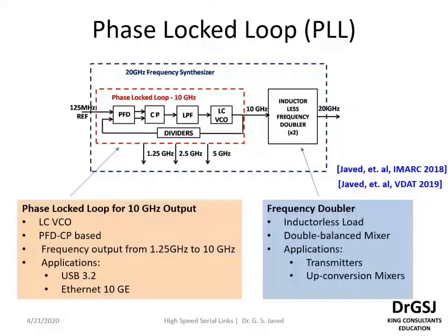This frequency synthesis is divided into two blocks: a phase locked loop highlighted in red, which contains an LC VCO, a phase frequency detector, and a charge pump based detection scheme generating a frequency output from 1.25 gigahertz to 10 gigahertz. This frequency output sees typical applications in USB 3.2 and 3.1 based systems, as well as Ethernet 10GE or 10 gigahertz per second Ethernet systems.